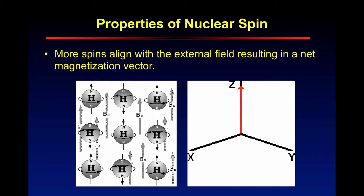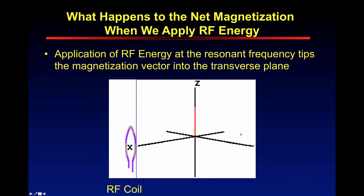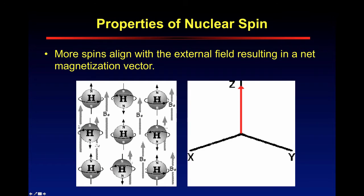More spins are going to align with the external field, so you're going to get a net magnetization vector. In this 3D diagram, that's exactly what this looks like. Going back to this, this is your net magnetization vector — it's pointing in the Z direction just by convention, because more of the spins are going to align with that external field.